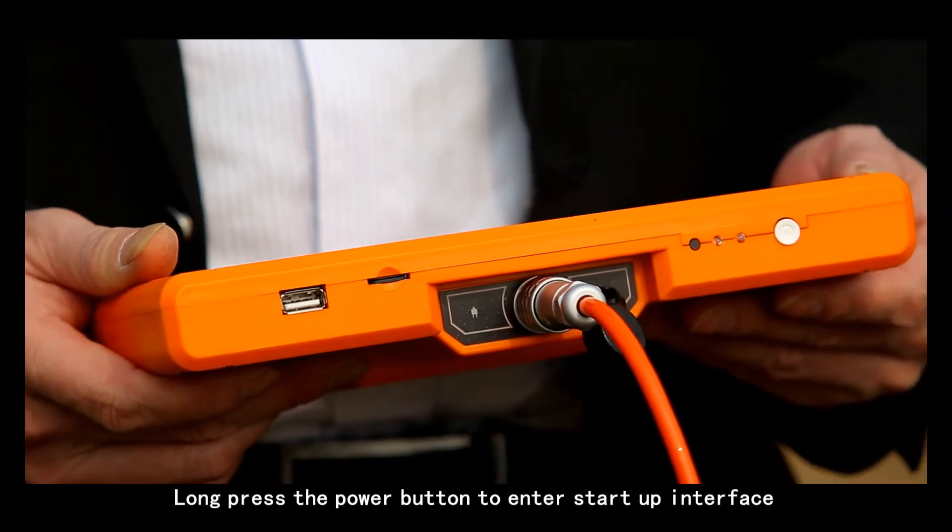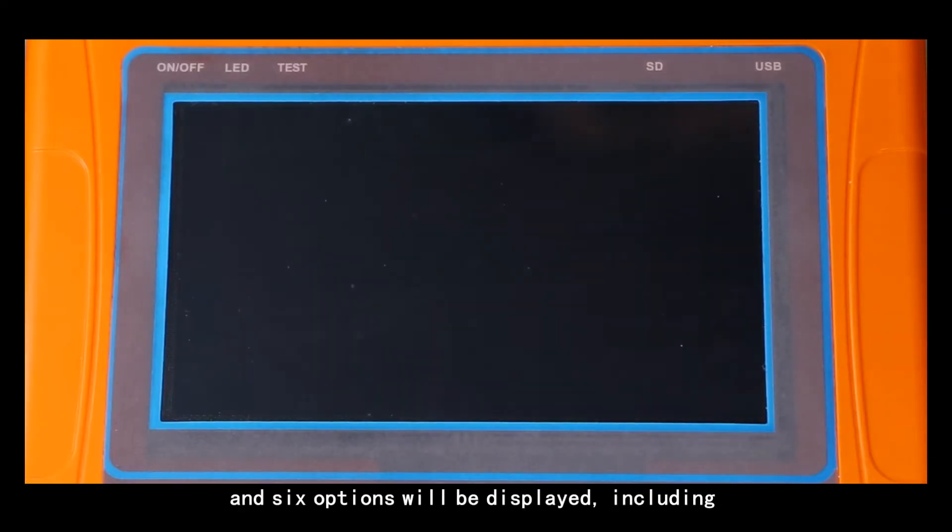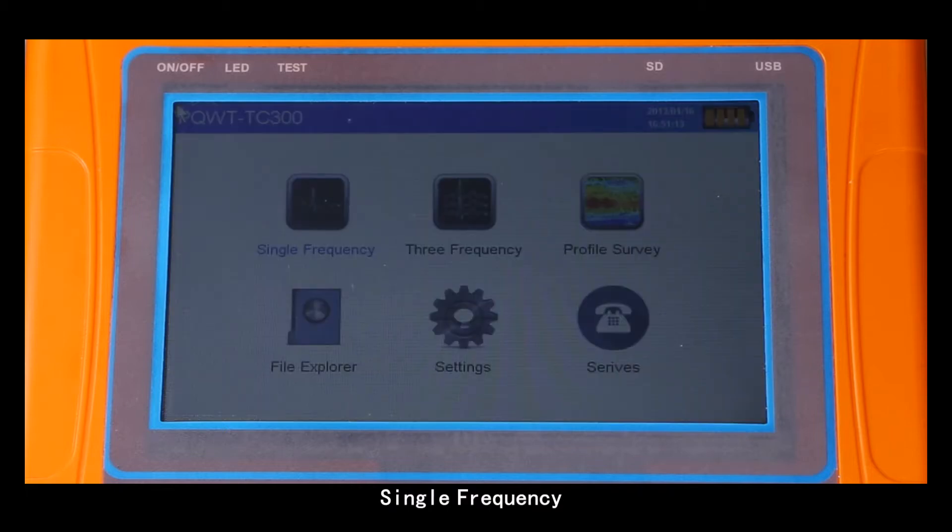Long press the power button to enter startup interface and 6 options will be displayed including: single frequency, 3 frequency, profile survey, file explorer, settings, surface.